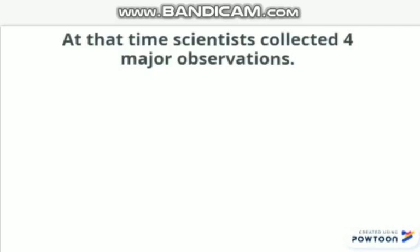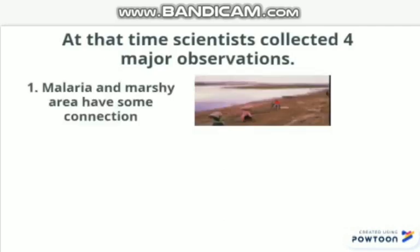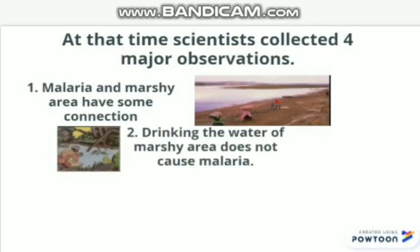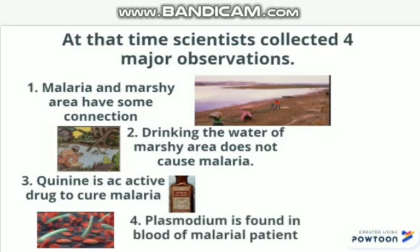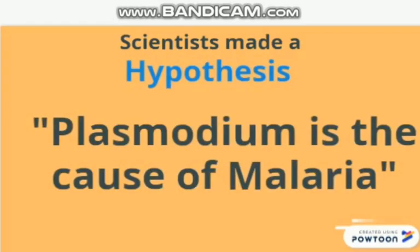At that time, scientists collected four major observations: malaria and marshy areas have some connection; drinking the water of marshy areas does not cause malaria; quinine is an active drug to cure malaria; and Plasmodium is found in the blood of malarial patients. On the basis of all these observations, scientists made a hypothesis that Plasmodium is the cause of malaria.